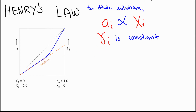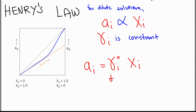This constant activity coefficient is what we call the activity coefficient at infinite dilution. For Henry's Law, the equation is aᵢ = γᵢ⁰ · Xᵢ, where γᵢ⁰ is the activity coefficient at infinite dilution, and this value is constant.